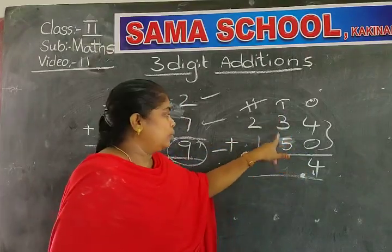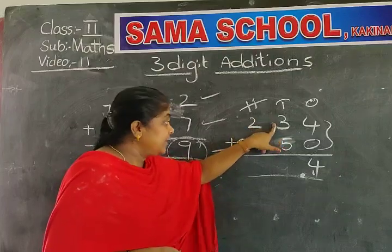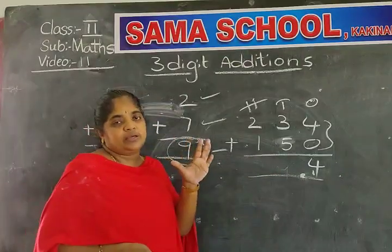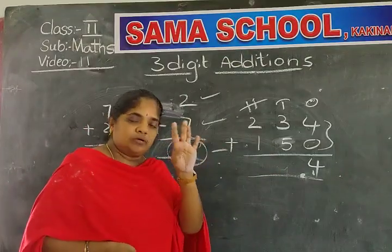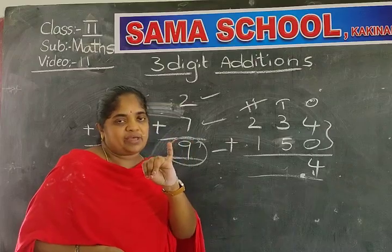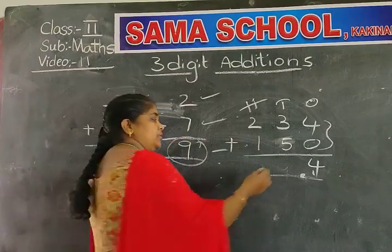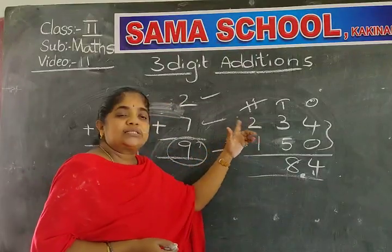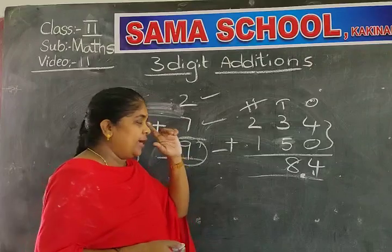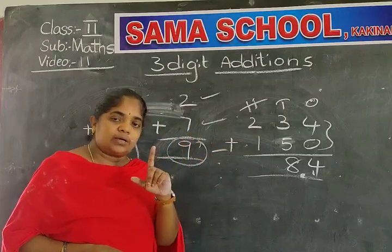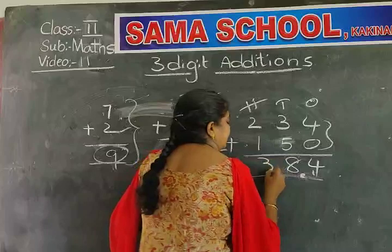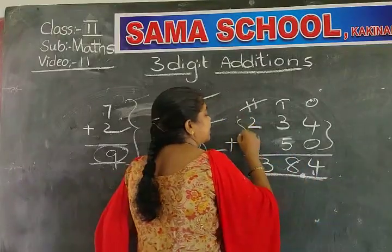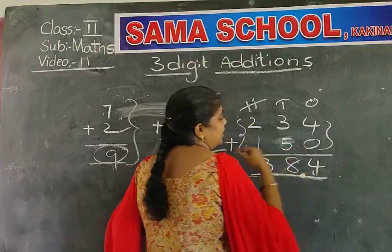Come to the tens place. Three is the first number — keep three in the mind, take out five fingers. Three after: four, five, six, seven, eight. Write down eight. Now come to the hundreds place — keep two in the mind, take out one finger. Two after three. The sum of 234 and 150 is 384.